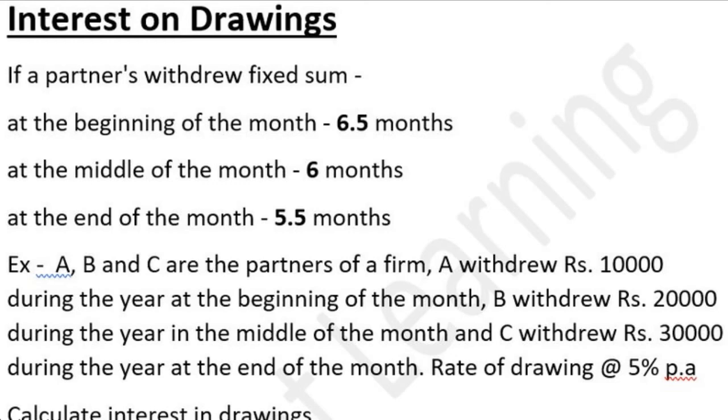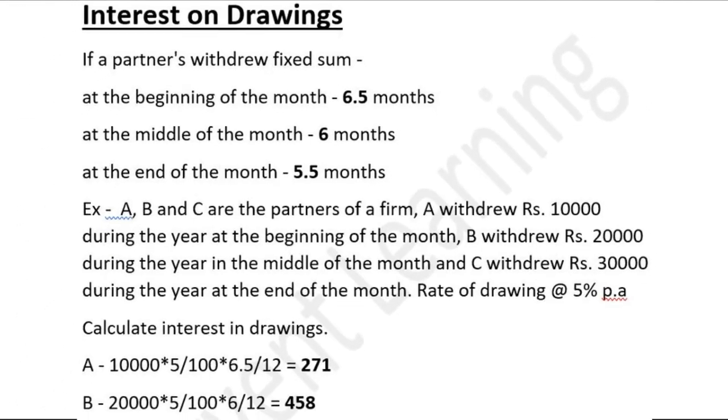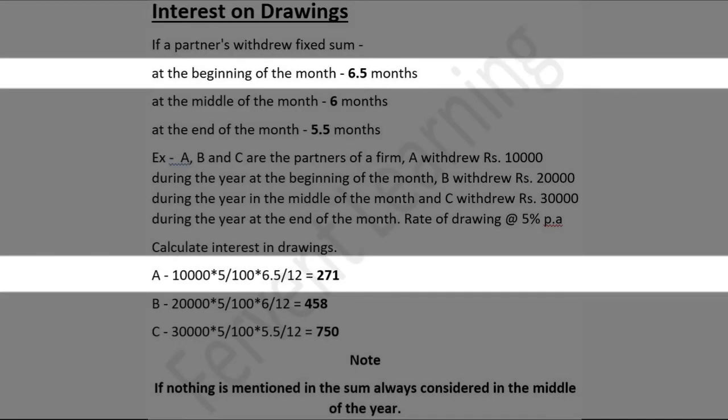So the calculation for A will be: ten thousand into five by hundred — five by hundred is your rate of interest on drawing — into 6.5 by 12. We use 6.5 by 12 because A is withdrawing capital at the beginning of the year. You will get rupees two hundred seventy-one as interest on drawing for A.